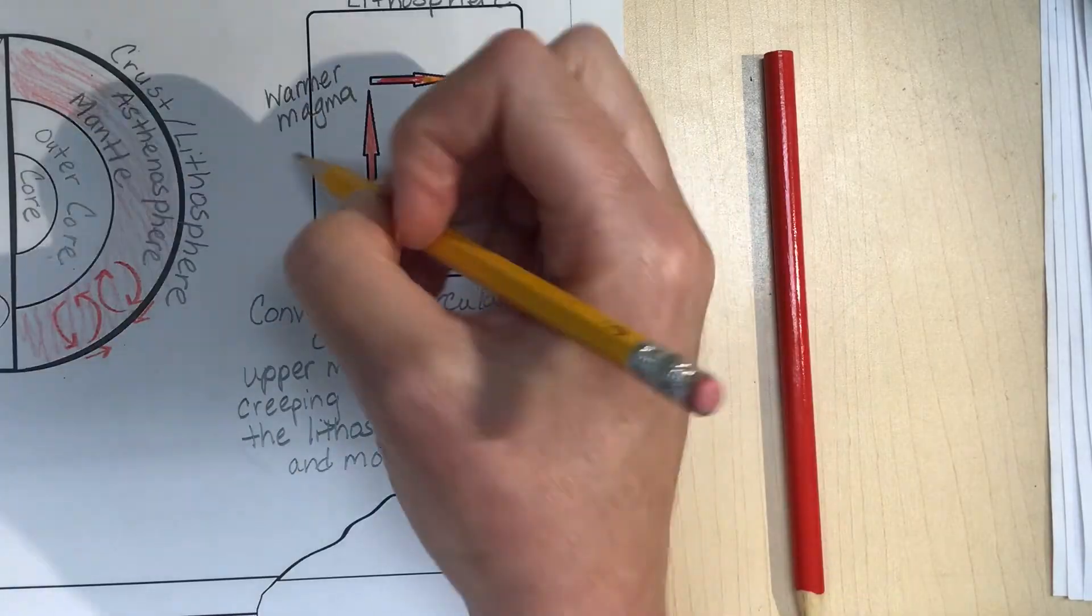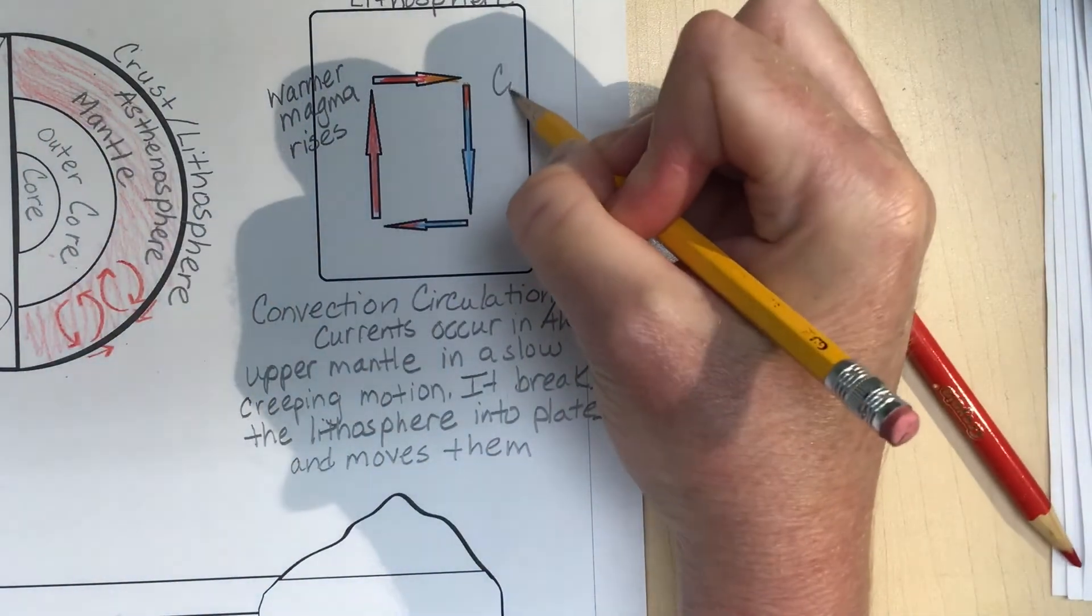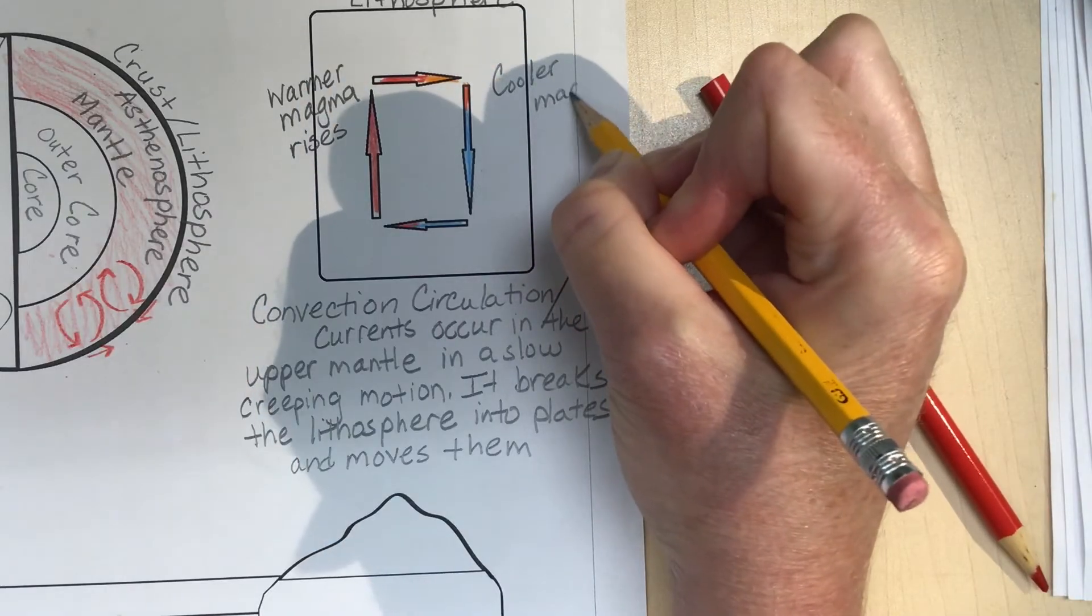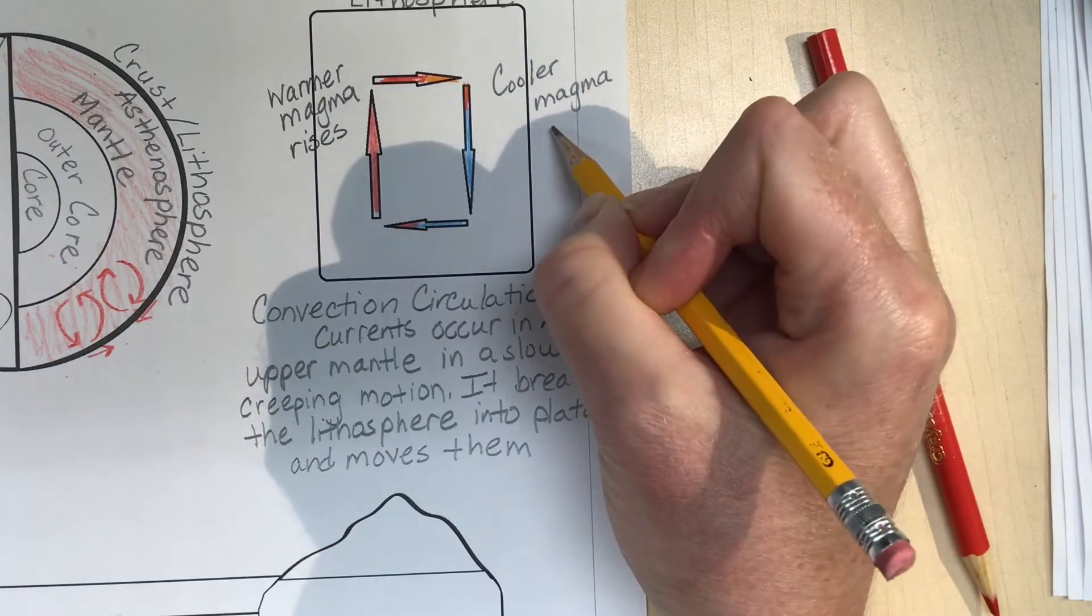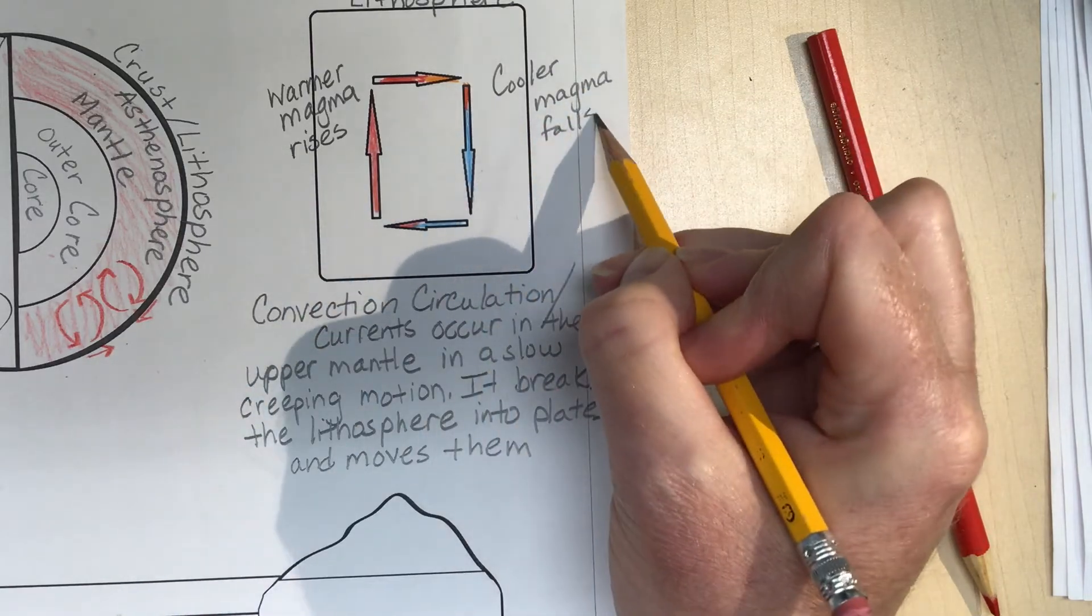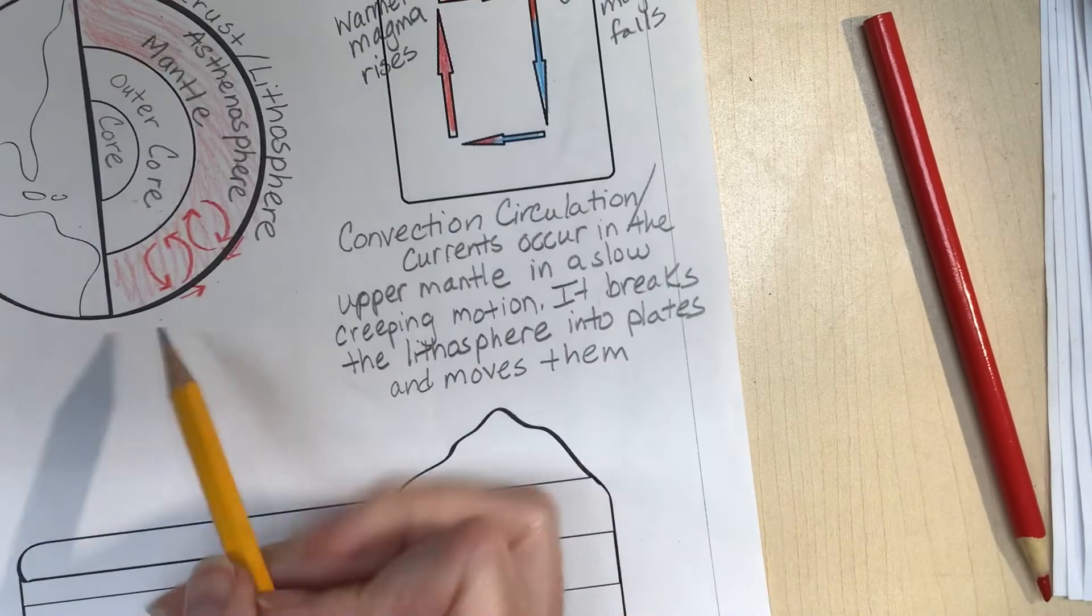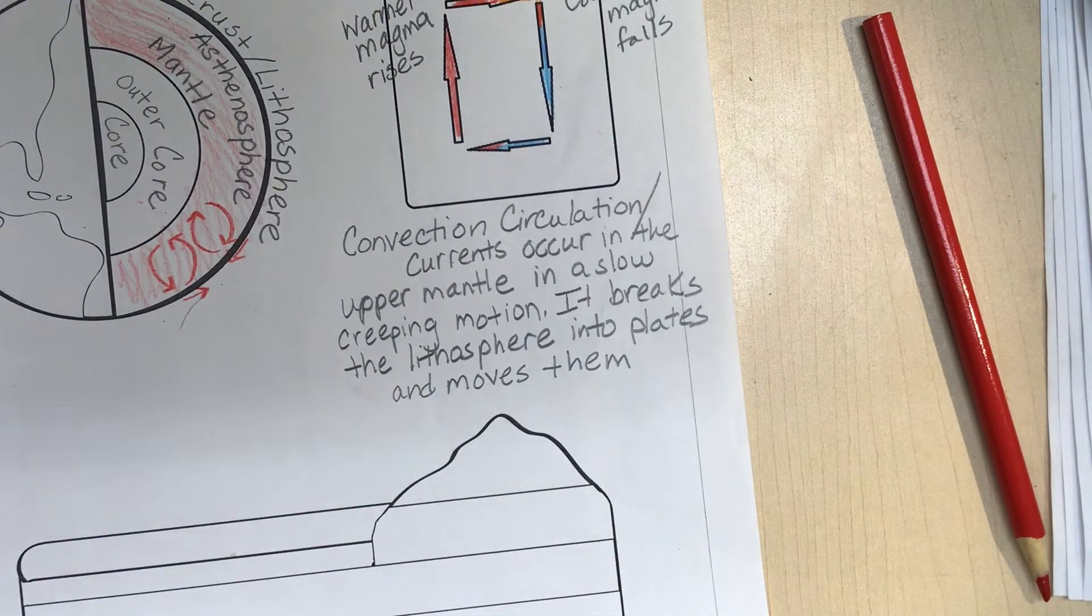Over here this is warmer. It's all magma so it's all hot, but the hotter, warmer magma rises and the cooler magma falls. It's not really cold - I draw it as blue to show you that it's cooler, but it's really all magma and it's hot, which is why I drew these as red.